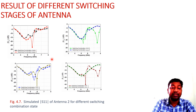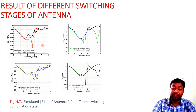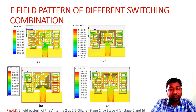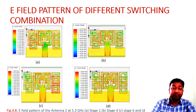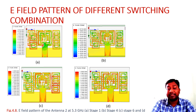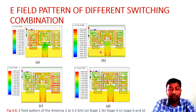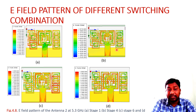The S-parameter results for all different switching states confirm the antenna covers the required frequency range. Analyzing the E-field patterns across all stages, we found that stages one, four, six, and eight are most effective — meaning in those stages the antenna beam is tilted in a particular direction. In stage six, the beam is radiated in a specific focused direction.